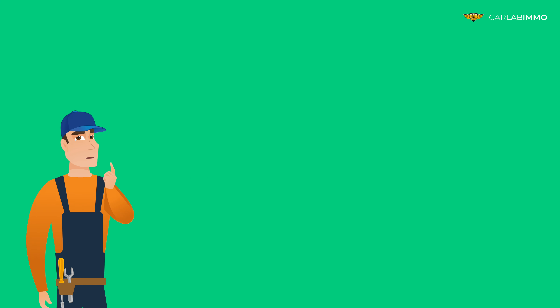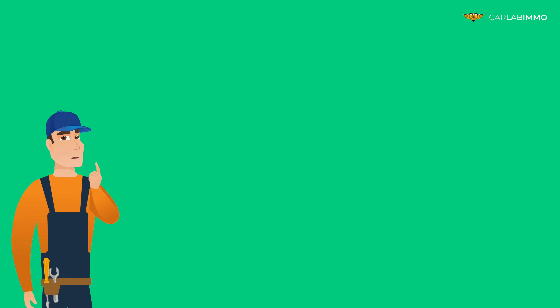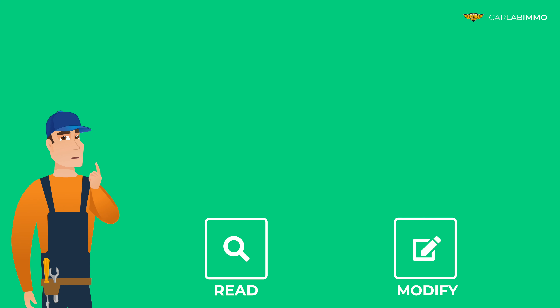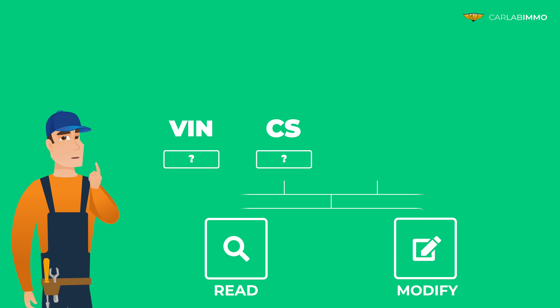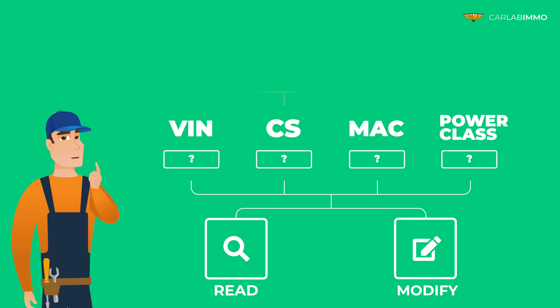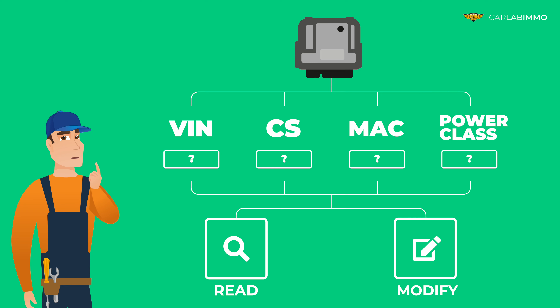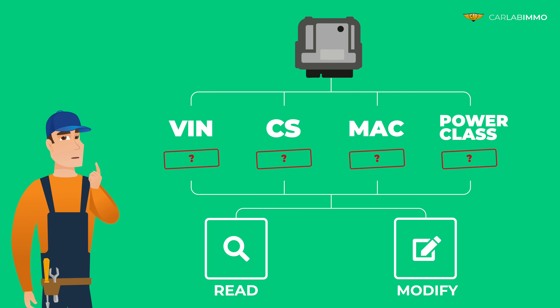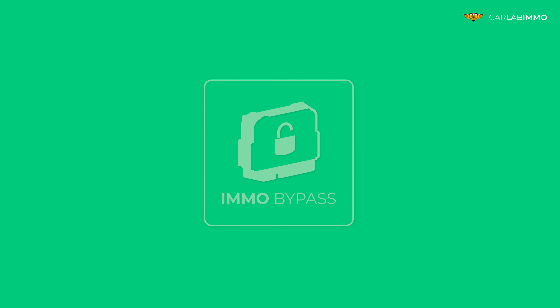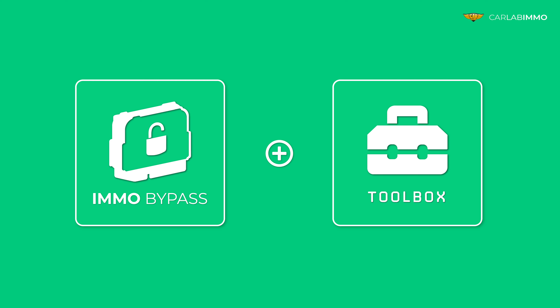Have you ever wondered what is the easiest way to read and modify VIN, CS, MAC, and power class values of that ECU you're working on? Now you can do it with MO Bypass thanks to its new function, the Toolbox.